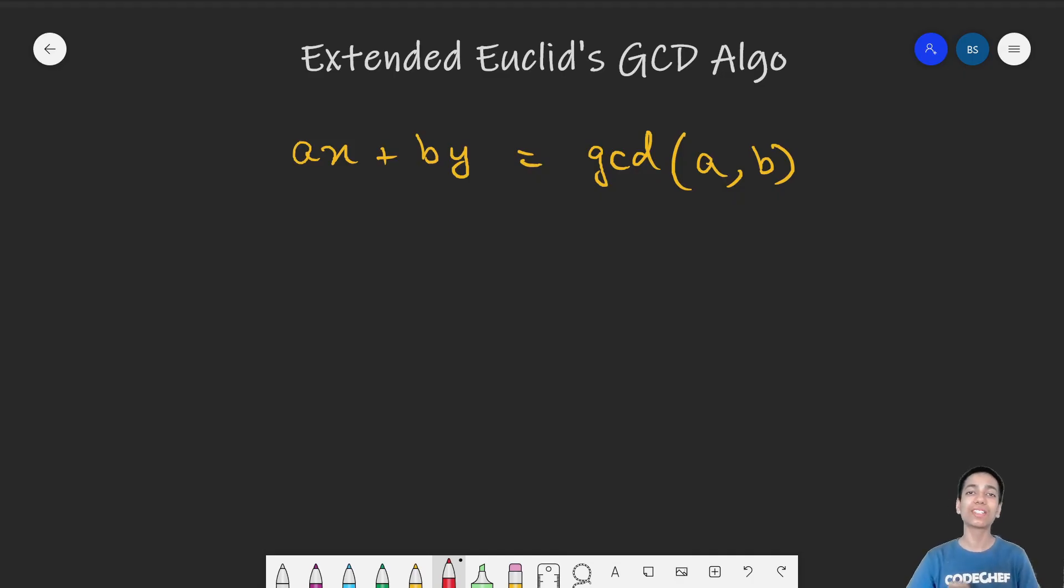Today, we are going to discuss the extended Euclid's GCD algorithm, which is assumed to be very tough, but I am trying my best to simplify it. In fact, it is one of the simplest algorithms that exist.